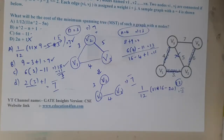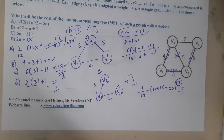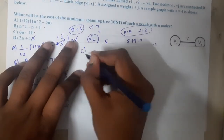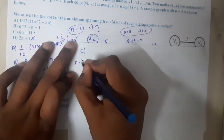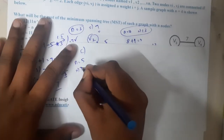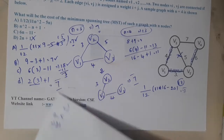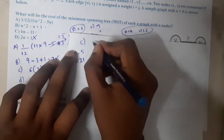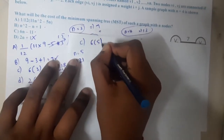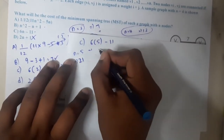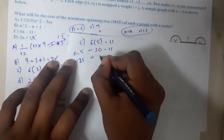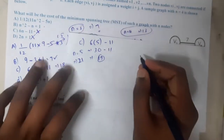The MST cost for n equal to 5 is 3 + 4 + 6 + 8 = 21. Now let us substitute n equal to 5 into the remaining options. Option C: 6×5 - 11 = 30 - 11 = 19, which is not 21. So option C is eliminated.